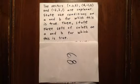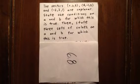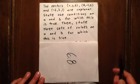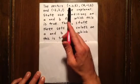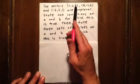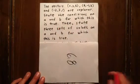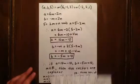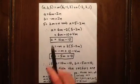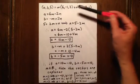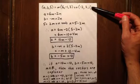In this question we're told that three vectors are coplanar and we need to state conditions on A and B for which that's true, then state three sets of values for A and B. The way we're going to do this is to let one vector be a linear combination of the other two. So we can say that vector AB5 is a linear combination of 6,-1,-2 and -2,2,1.